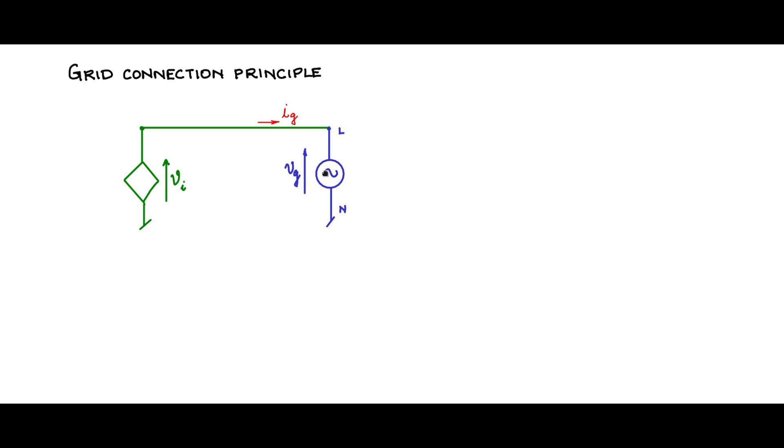Instead, you will have to interpose an impedance L, an inductance, in between. This inductance is a non-dissipative energy storing element that will act as the impedance and match these two voltage sources. Alternatively, you can view this voltage source along with the inductance as forming a current source, which can be connected to the grid.